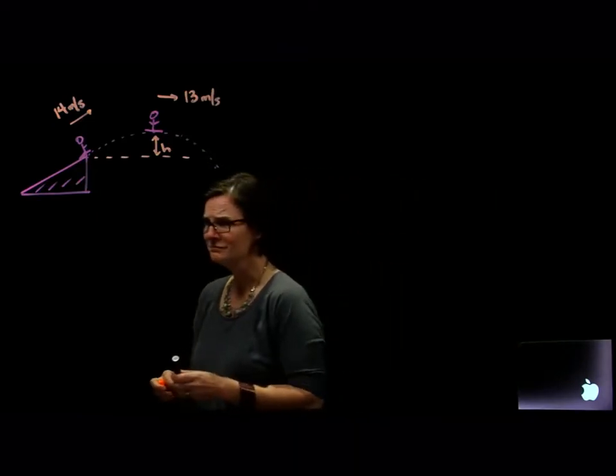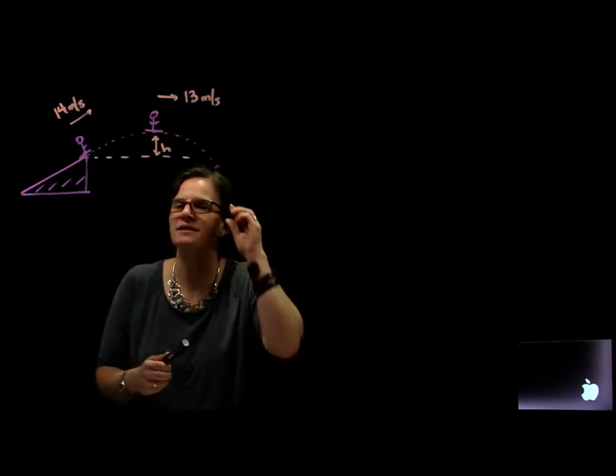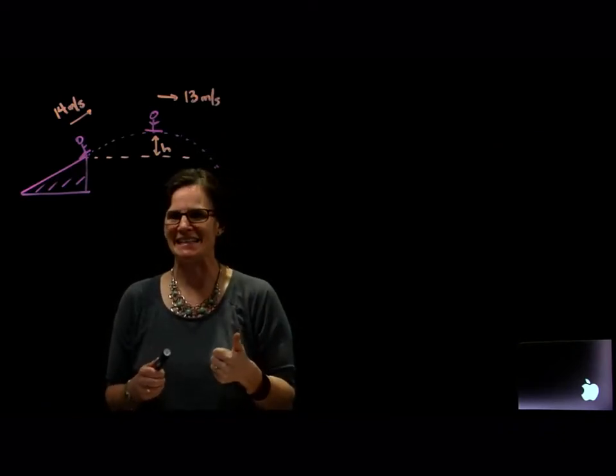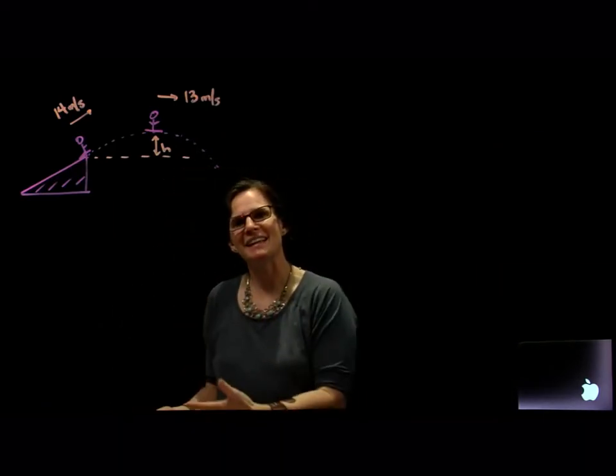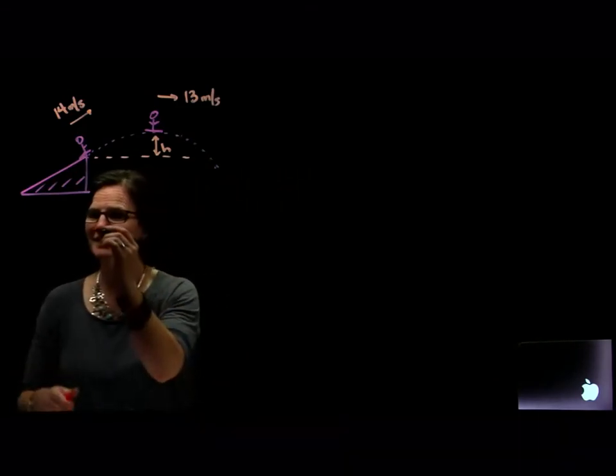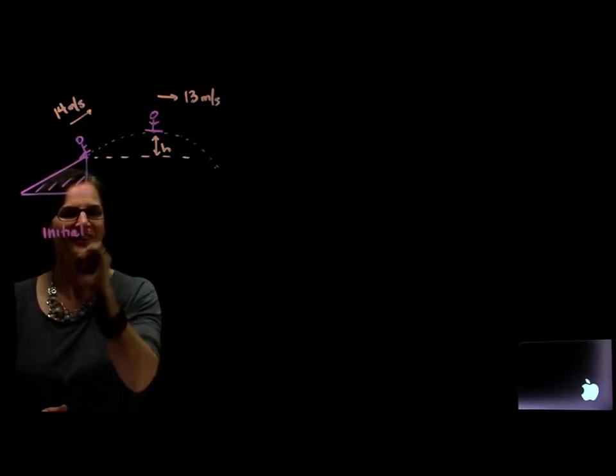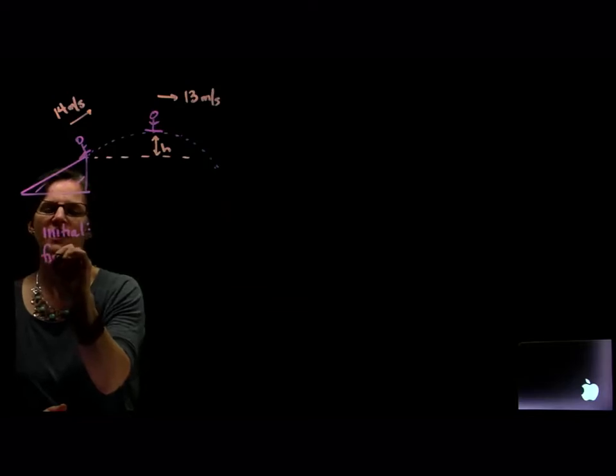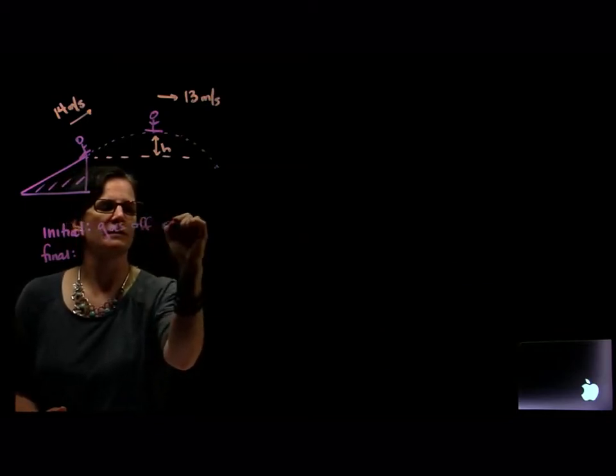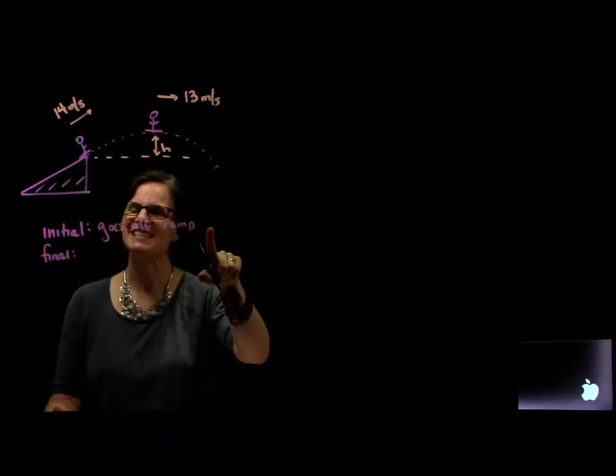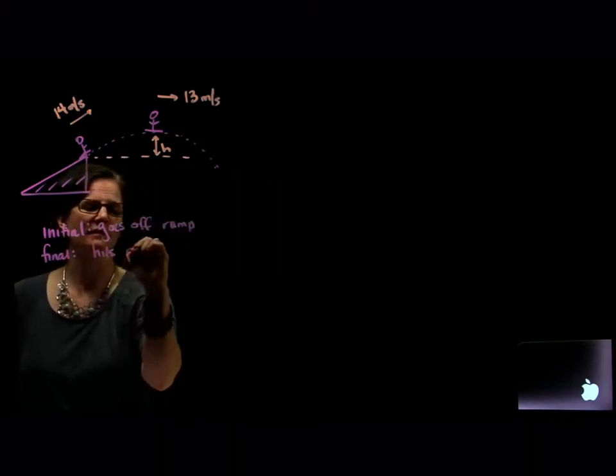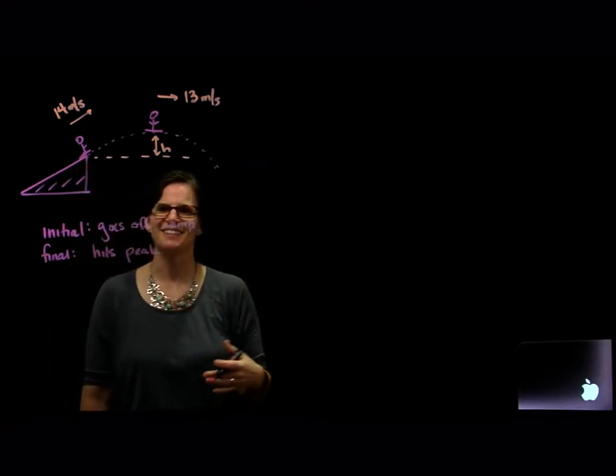We have to recognize that the energy state of this object exists and we need to define what's the beginning and what's the end so that we can look at conservation through that time. We want to define the initial when he goes off the ramp and the final when he hits the peak.